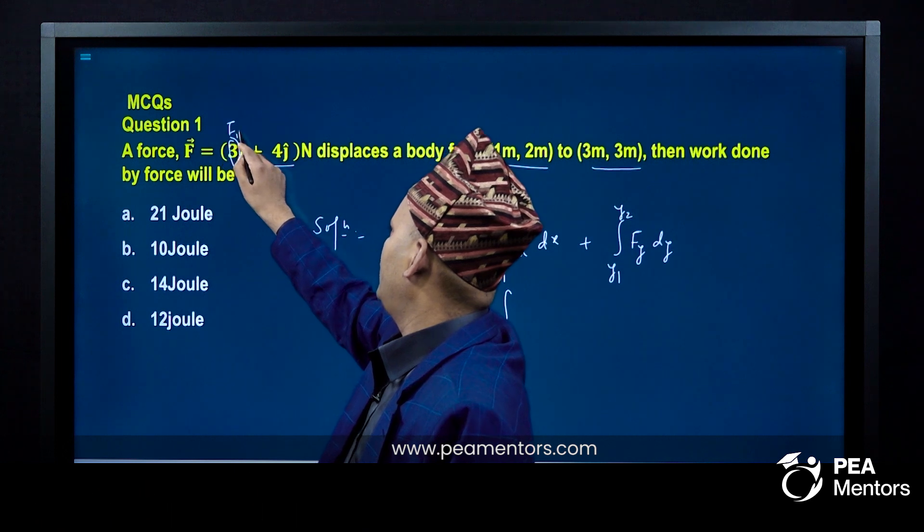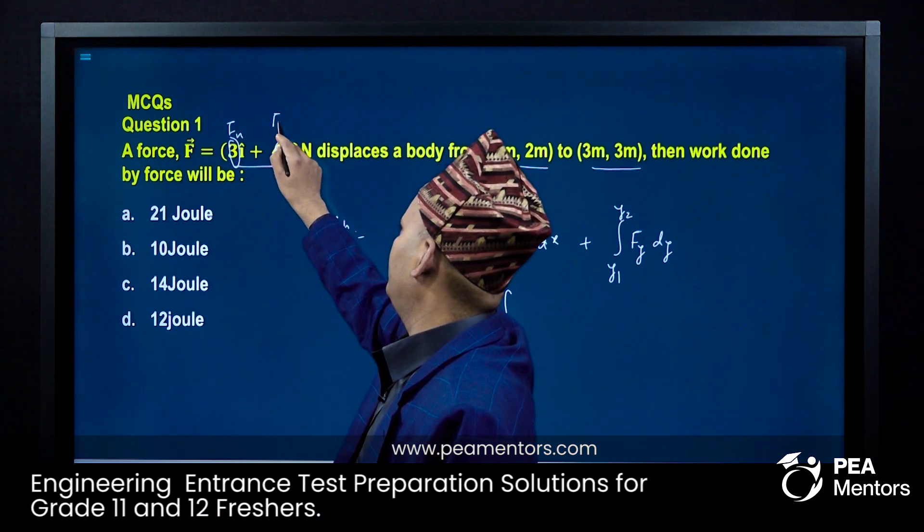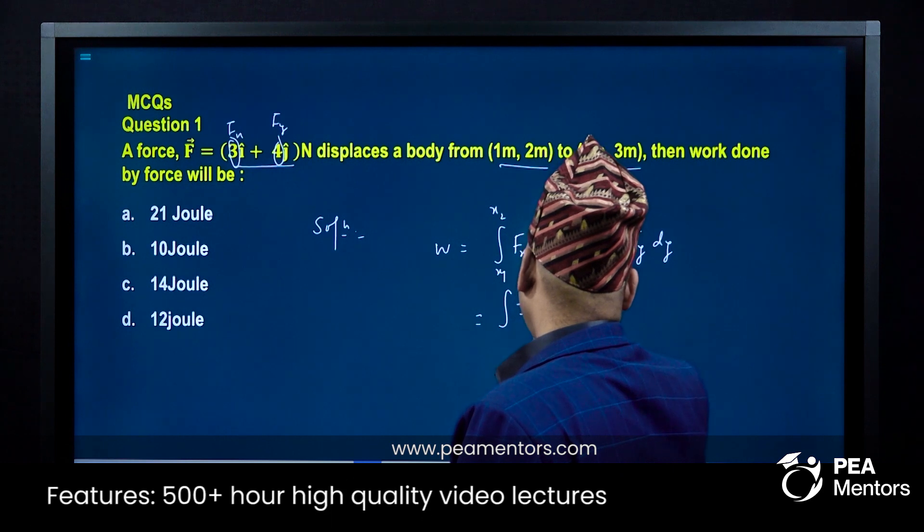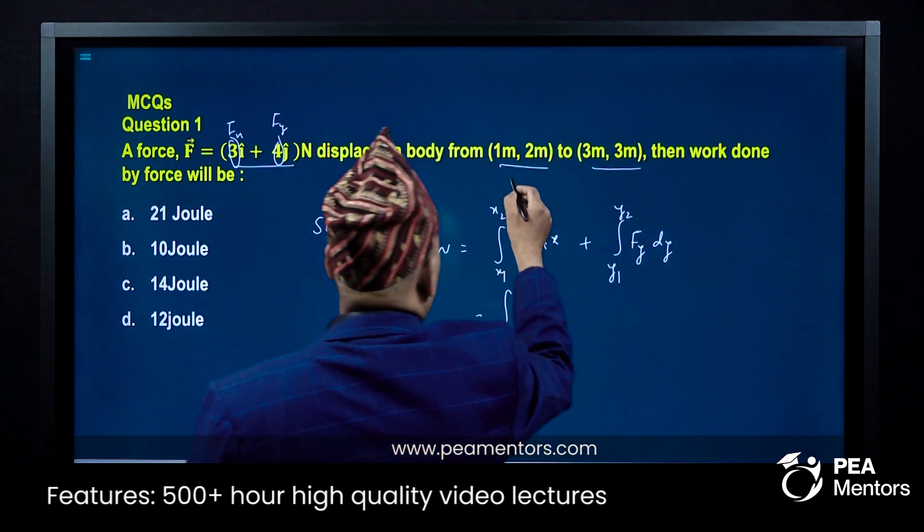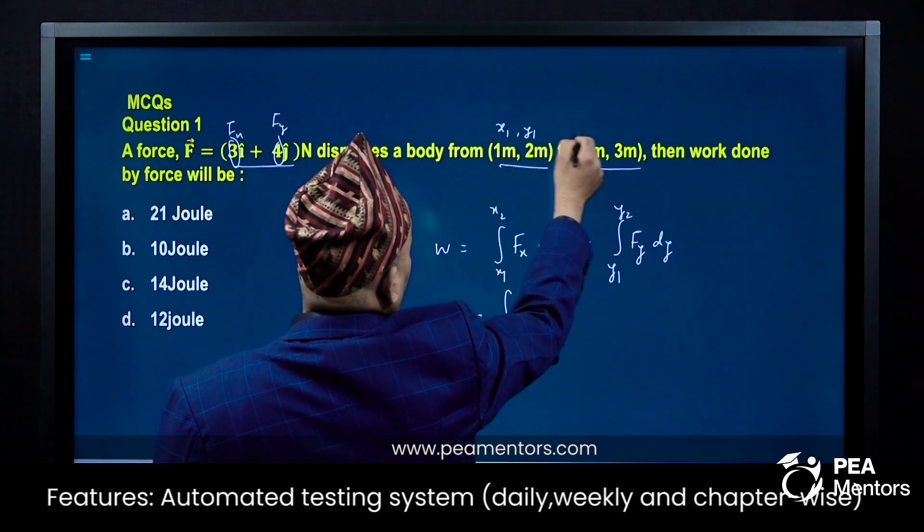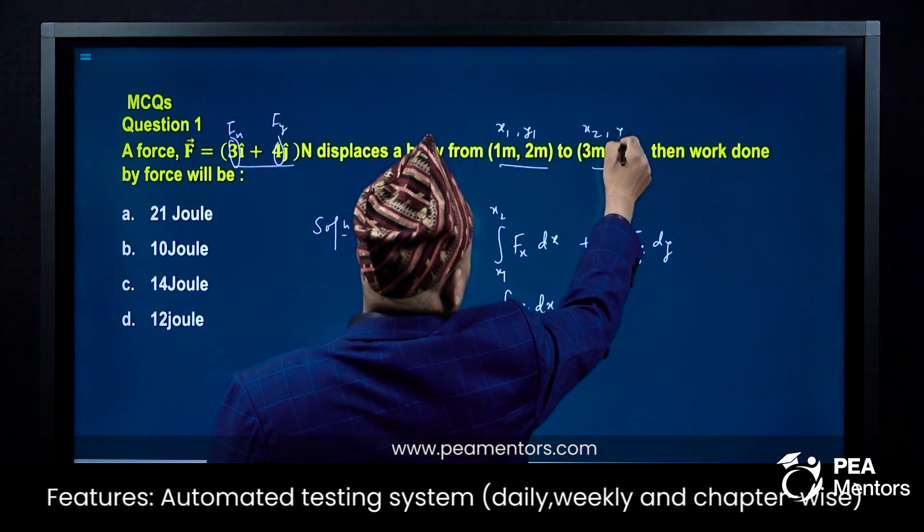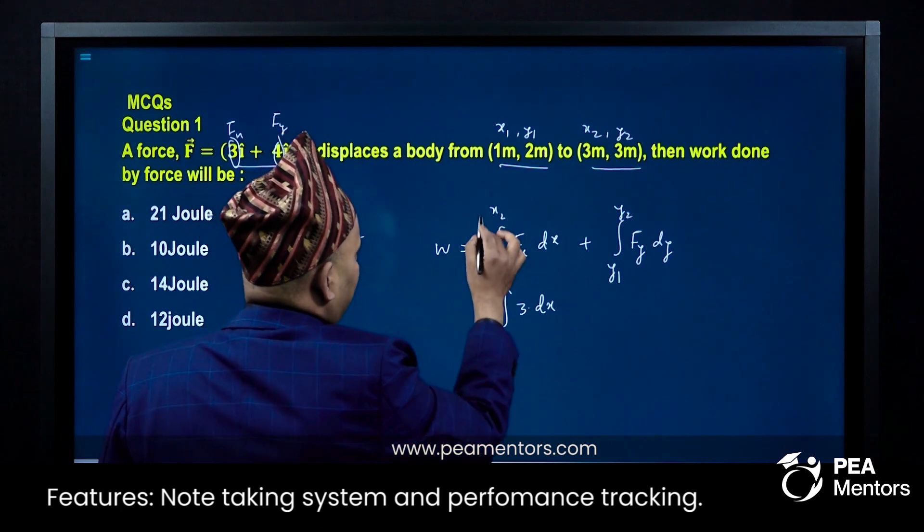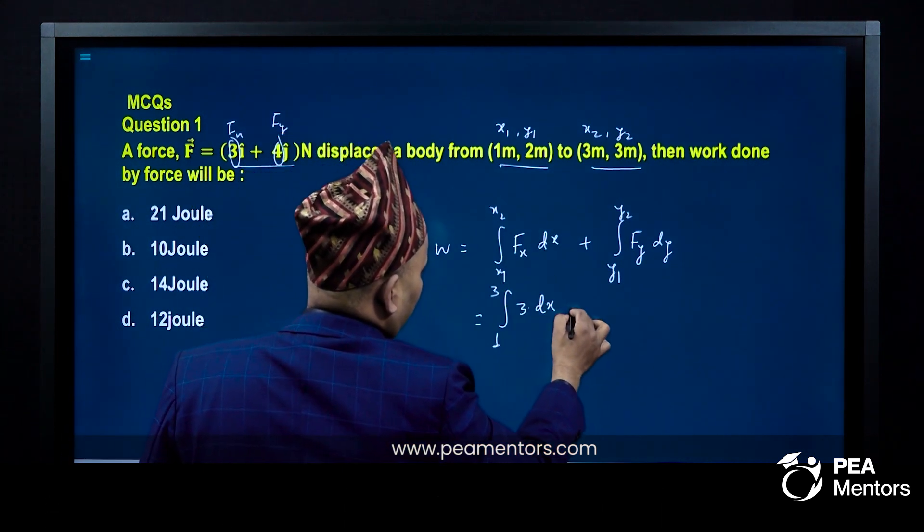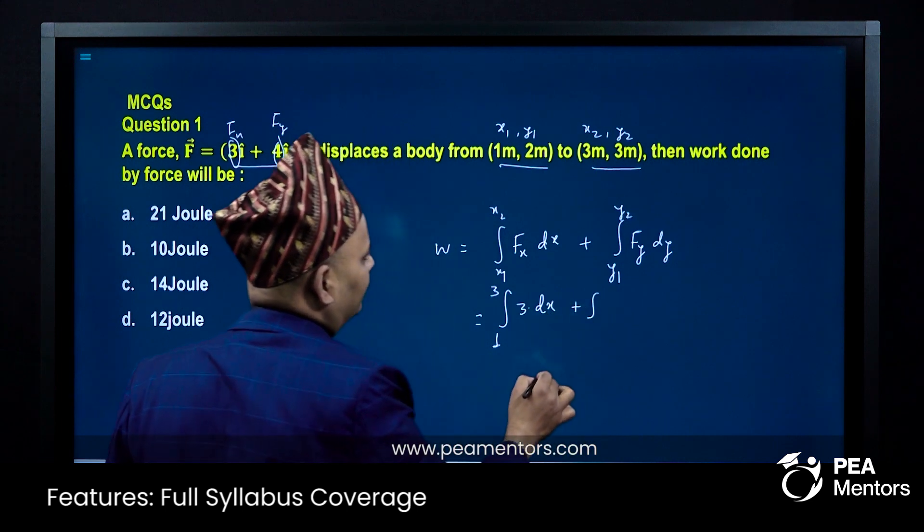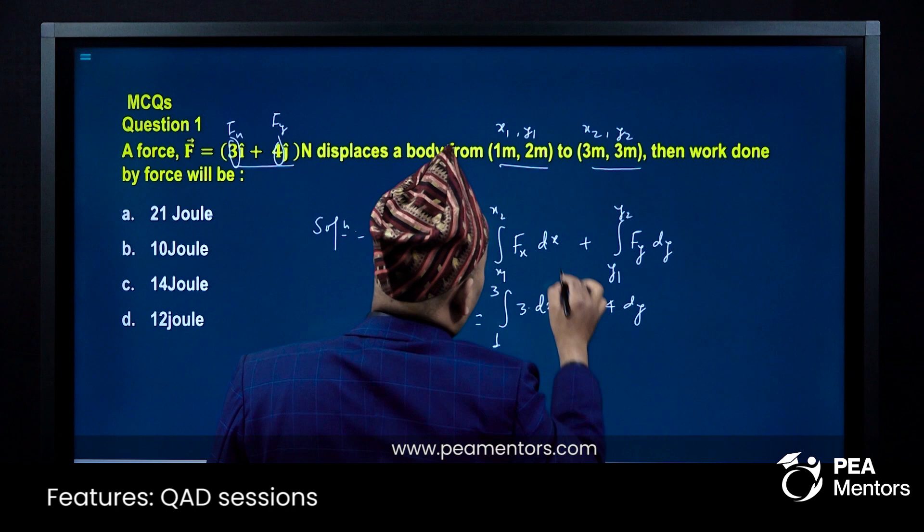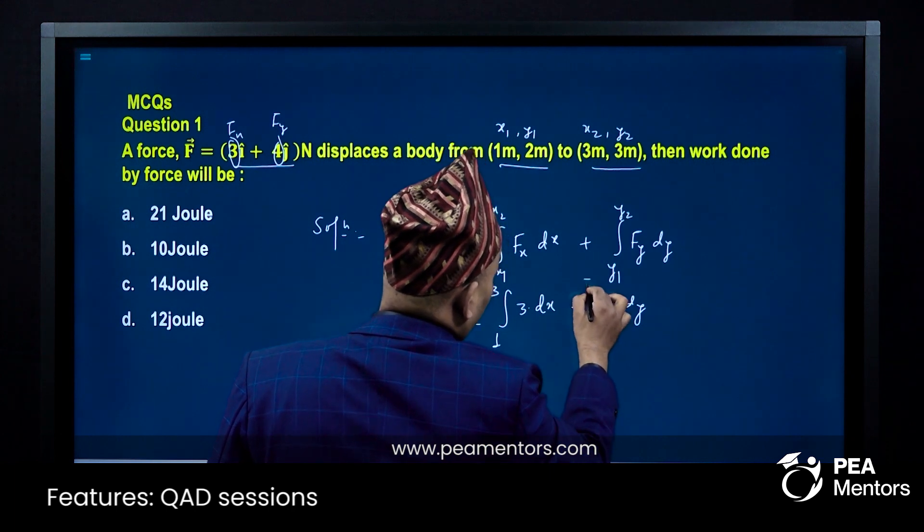fx is the x component, fy is the y component. So integral 3 into dx, the x coordinate x1 comma y1 to x2 comma y2. This means x1 is 1, x2 is 3, plus integral 4 into dy from y1 to y2, so this is 2 to 3.